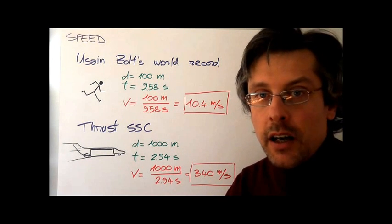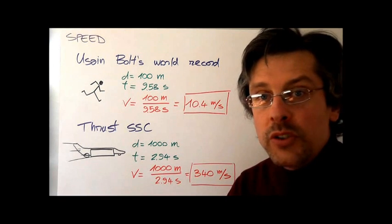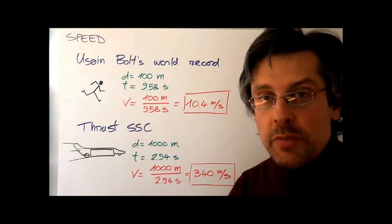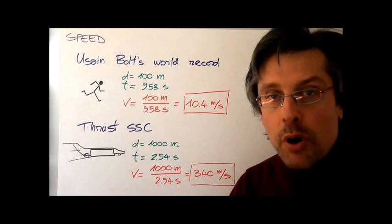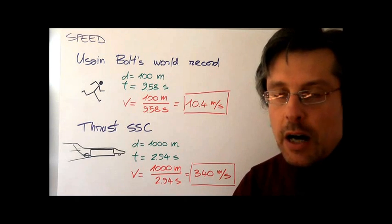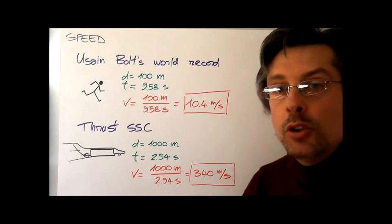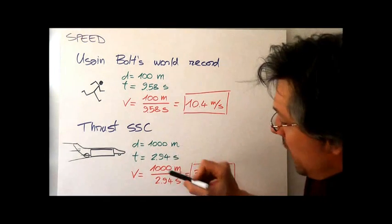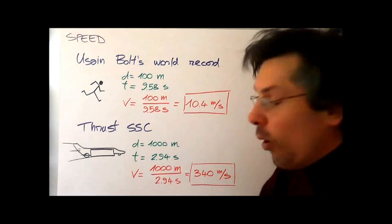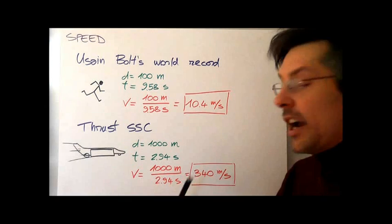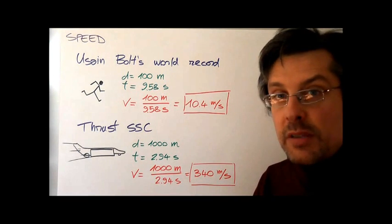Talking about very fast things, the Thrust SSC—more a jet plane than a car, actually, but it's a land vehicle that holds the world record for speed. In the 1990s, this jet-powered car broke what we call the sound barrier by traveling a distance of 1000 meters in 2.94 seconds. Again, we use the formula, we do the ratio between 1000 meters over 2.94 seconds, and you get 340 meters per second, which is the speed of sound.